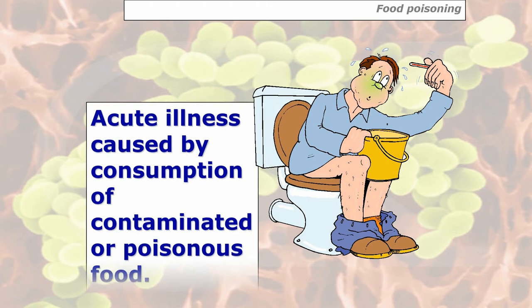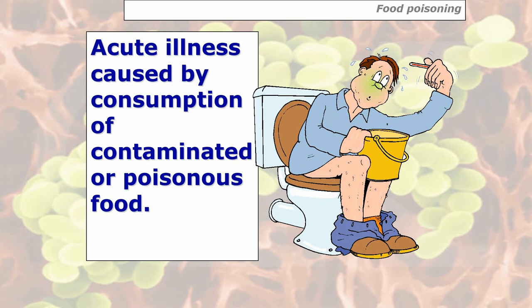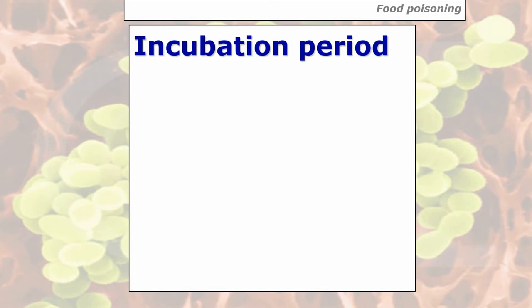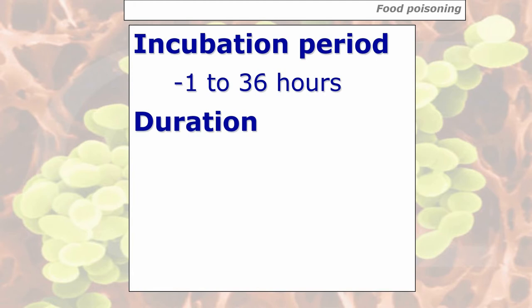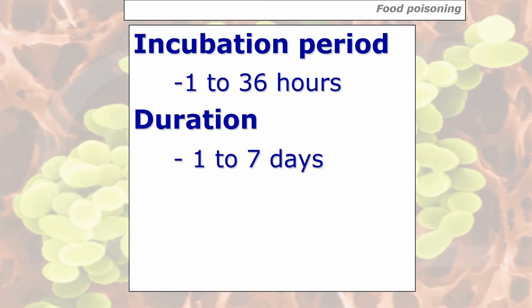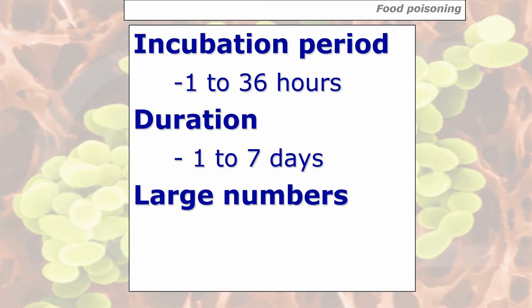So what is food poisoning? It's an acute illness caused by the consumption of contaminated or poisonous food. The main thing to remember is it's an acute illness, which means it happens quickly — it could happen within one hour of ingesting poisonous food, as opposed to a chronic illness which could take a long time to develop. A couple of definitions which could come up on the exam: the incubation period is the time taken from when you first ingest the food to when you start showing signs and symptoms of food poisoning — anything from 1 to 36 hours. Duration of food poisoning is anything between one and seven days, and with food poisoning it's about large numbers causing illness.